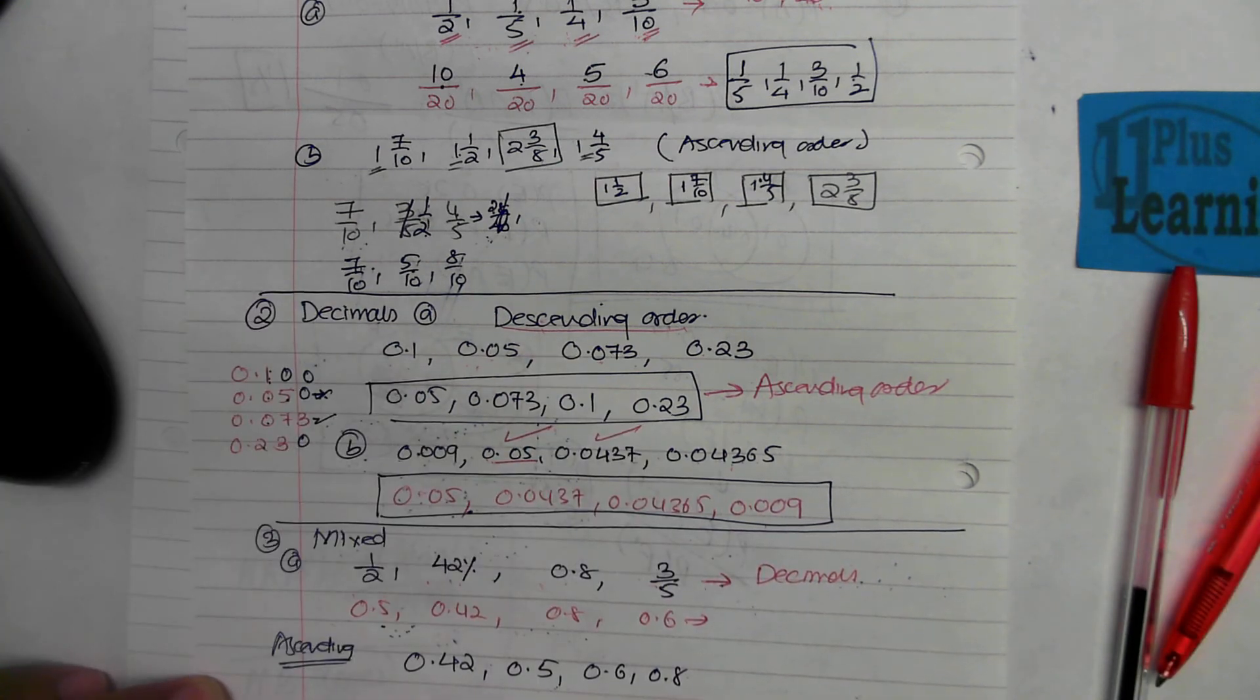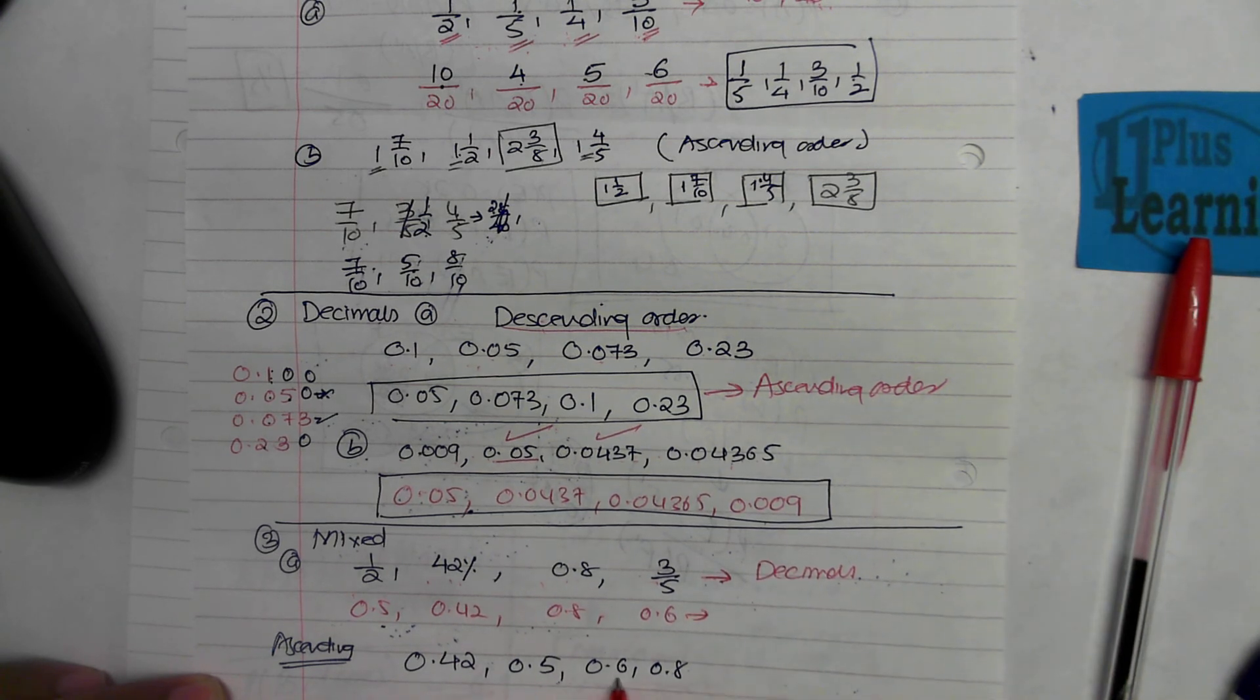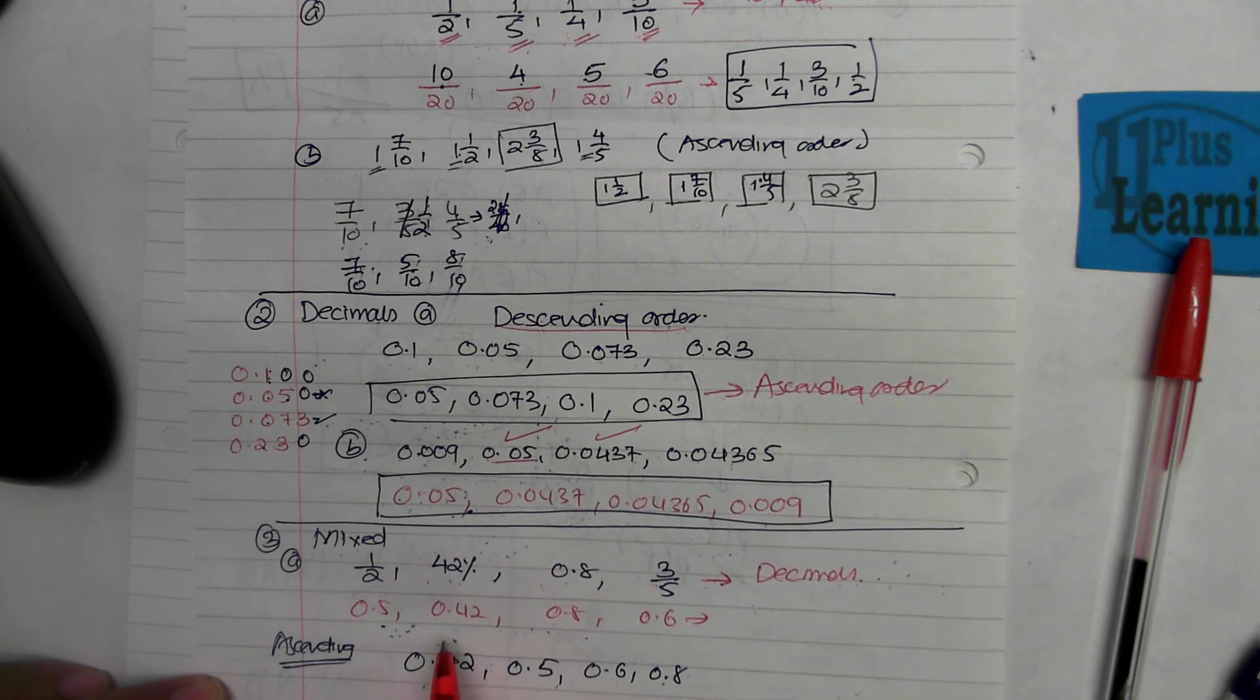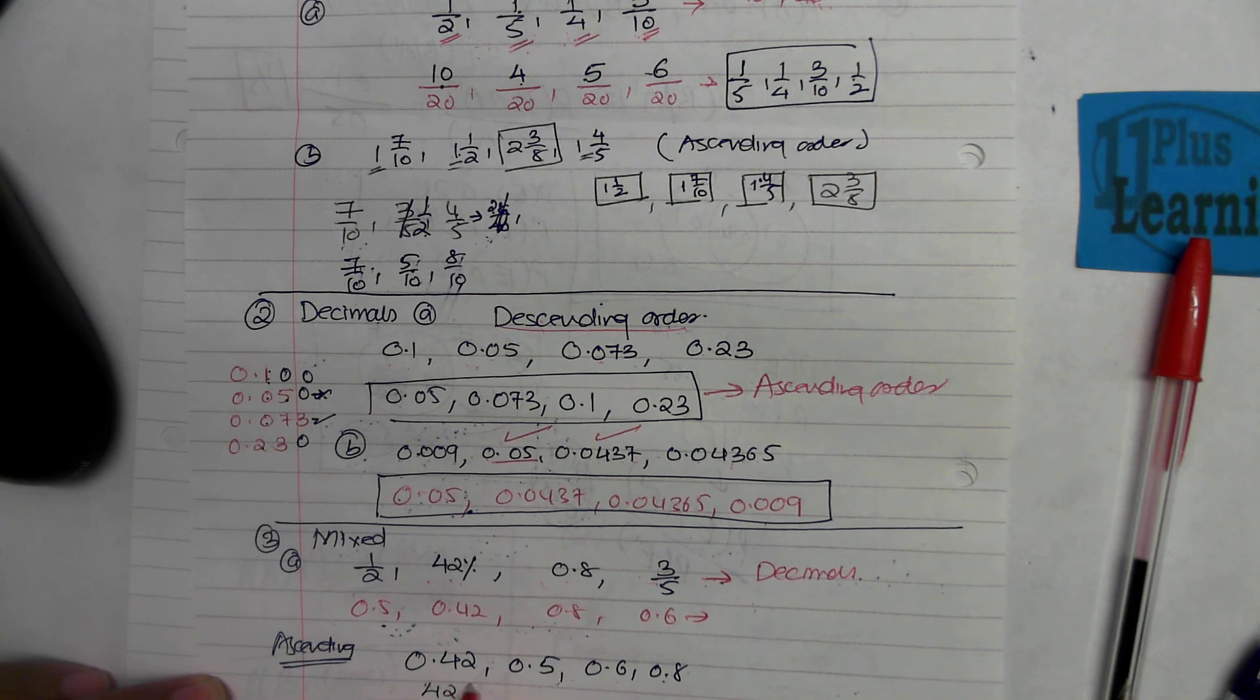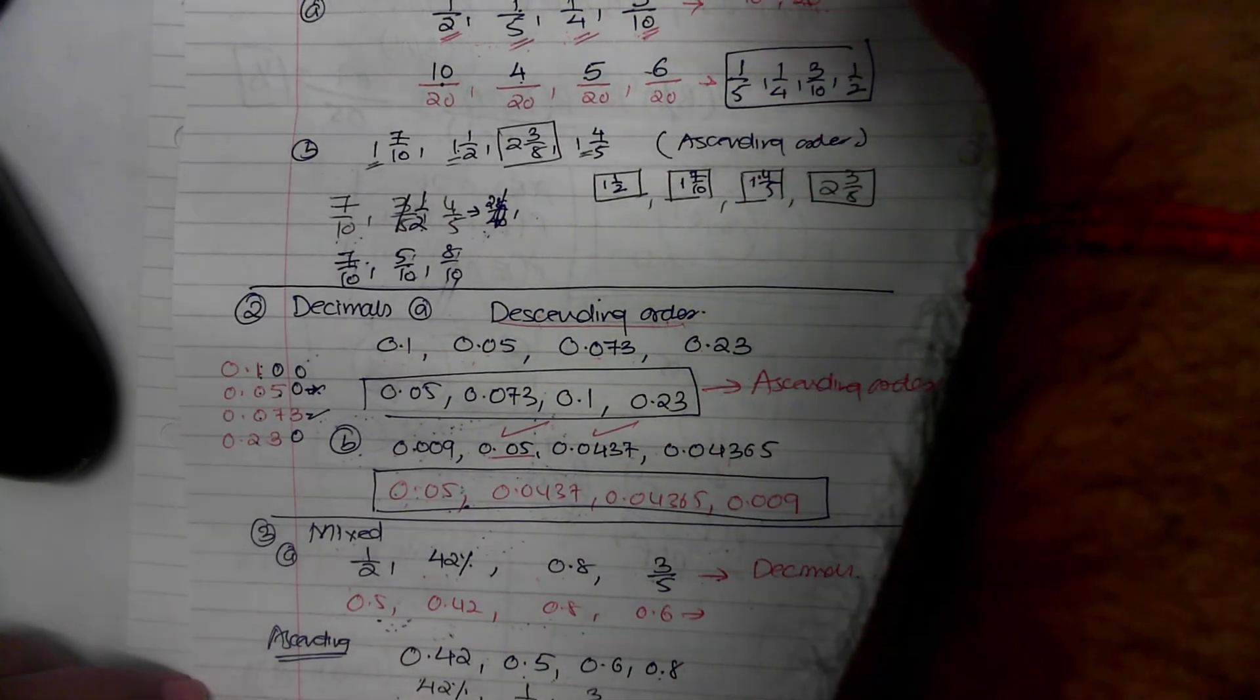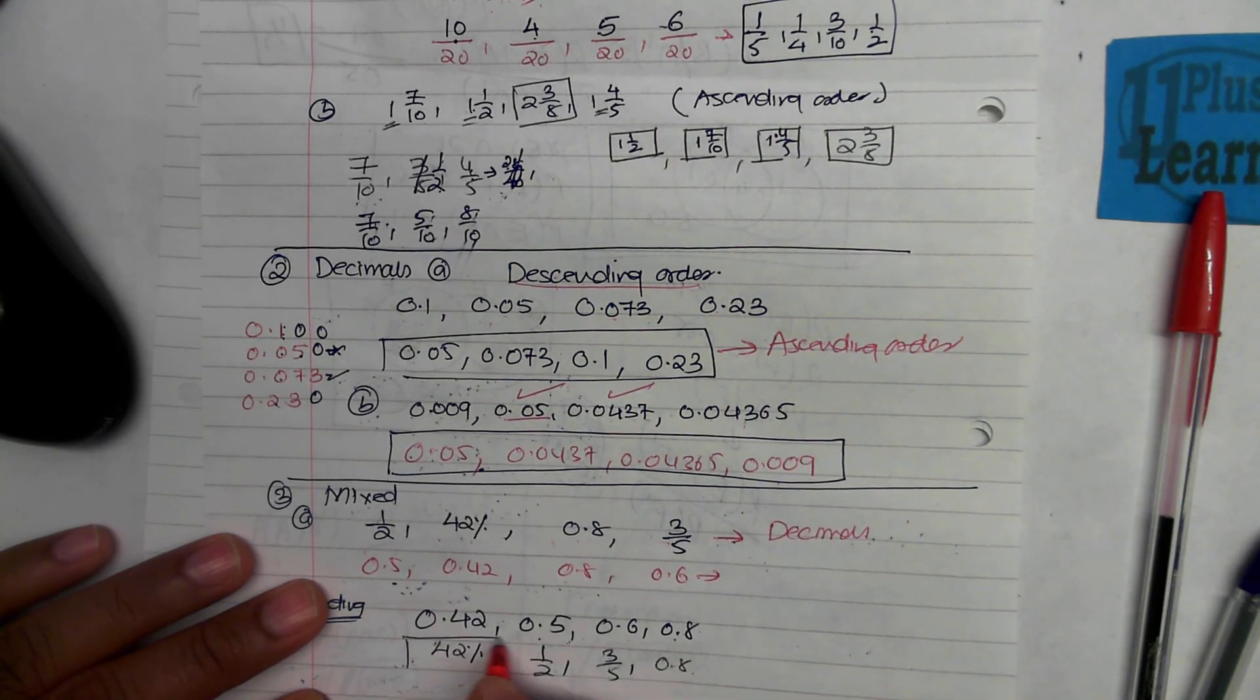I'm pretty sure you would have got this answer. You have got this answer, but I would advise you again, this will not be accepted as a correct answer even though this is right. You're expected to write the answer back in the form of the question. So 0.42 was given to you as 42%, 0.5 was given to you as one-half, 0.6 was given to you as three-fifths, and then the last one was given to you as 0.8. These are the four numbers in ascending order.